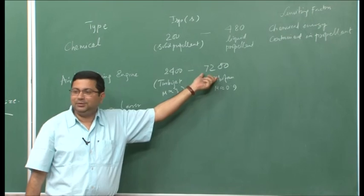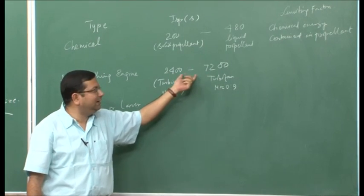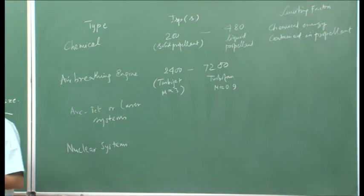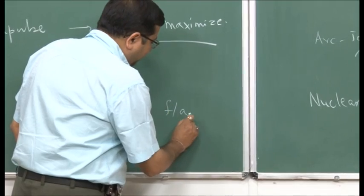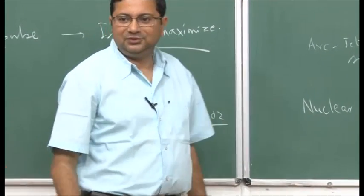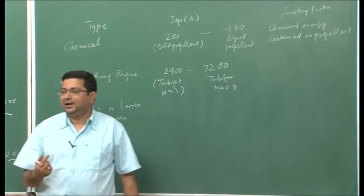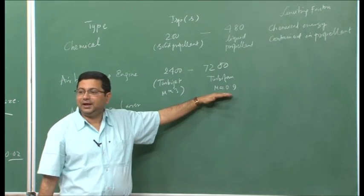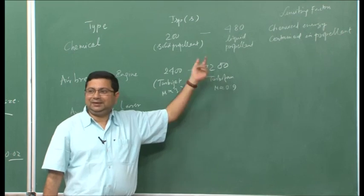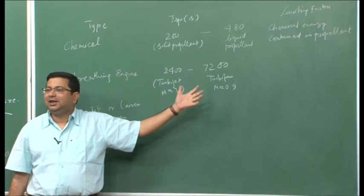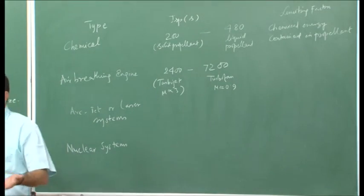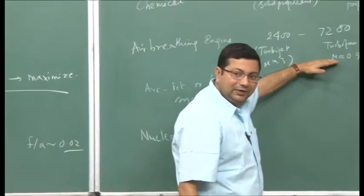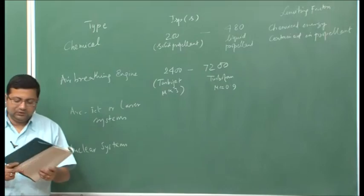The weight variation considered in the specific impulse calculation is only the weight of fuel, which is a very small fraction. Typically for jet engines, the fuel-to-air ratio is about 0.02, so a small amount of fuel is required because the main propellant is air. However, for the same reason, it cannot be used for rocket propulsion — when air is not present, this engine cannot be used, as the name suggests: it is an air breathing engine. Therefore, when the specific impulse is high, it cannot be used as a rocket.